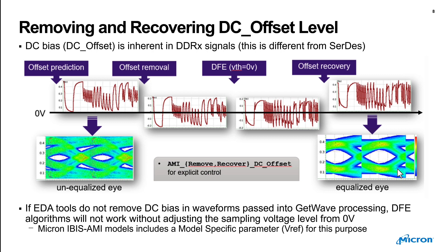DC offset in IBIS refers to the DC common mode voltage in a DDR system. Part of the IBIS-AMI flow involves doing a step response and converting it to an impulse response, which loses the DC common mode voltage — but that's important. The DC offset is something the simulator calculates and can pass into the RX model, which can use it to model effects such as gain saturation. The EDA tool removes the DC offset from any waveform being processed in AMI through the getwave function, but can add it back at the end purely for display purposes.